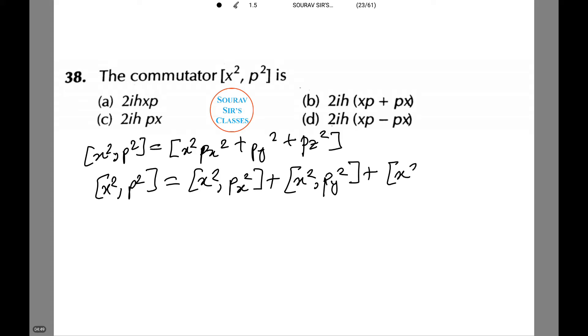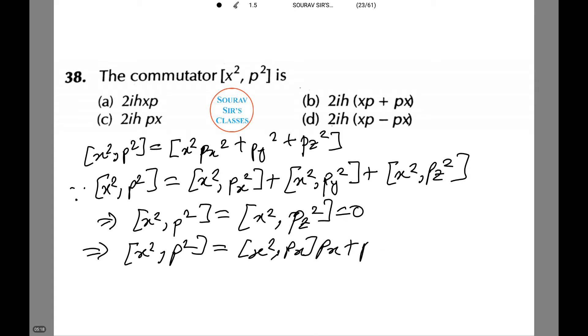Therefore, [x², p²] equals [x², pz²], which equals zero. Or [x², p²] equals [x², px]·px + px·[px, x²].